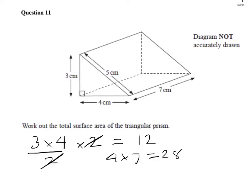We then have the back rectangle, so it's 3 times 7. 7 times 3 is 21.